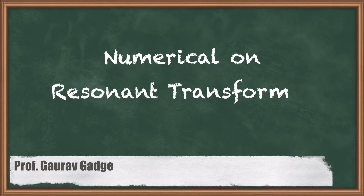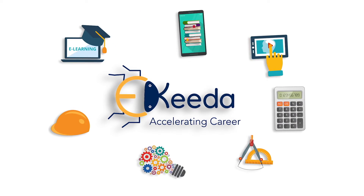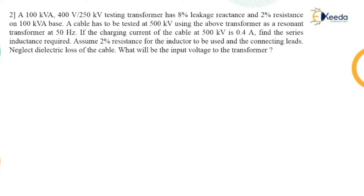Hello friends, welcome back to the next lecture on numericals on the resonant transformer. Now, how to identify the numerical and its topic — just check this statement: 100 kVA, 400 volt by 250 kilovolt testing transformer. It is clear from this that there is an input voltage of 400 volt on the primary side of the transformer.